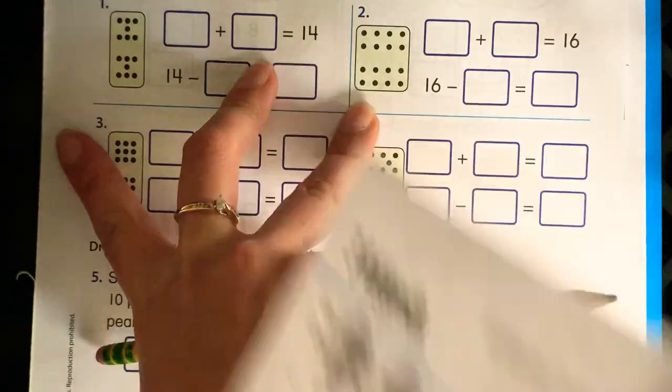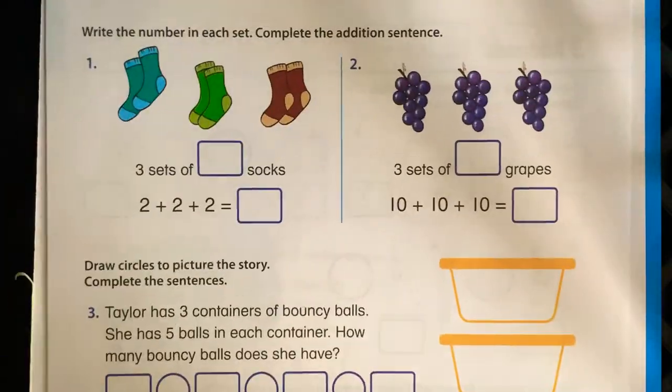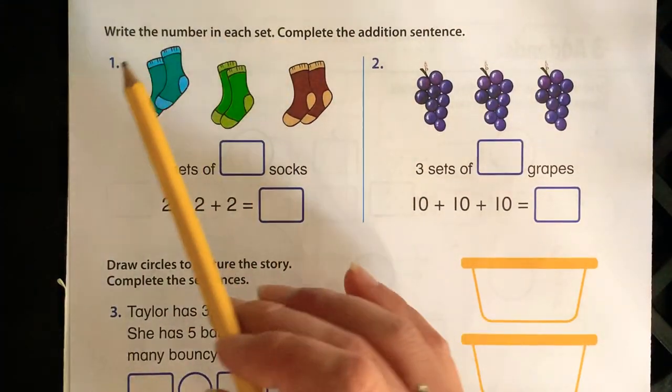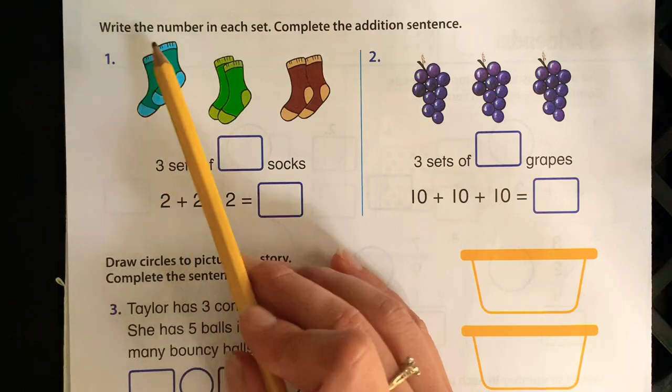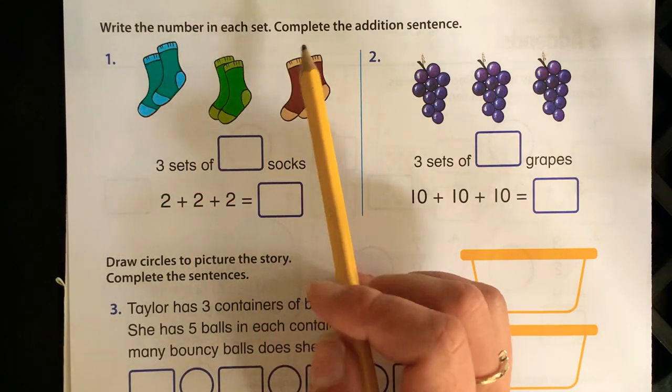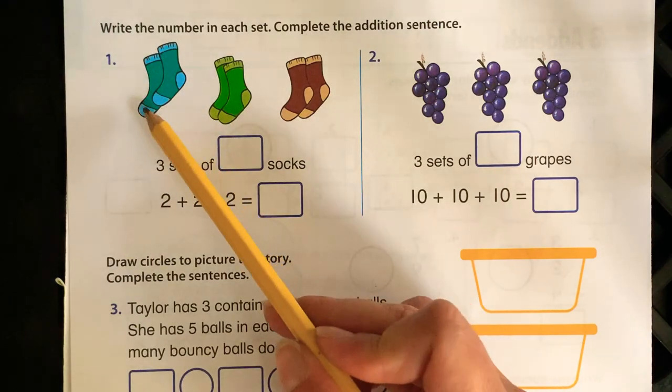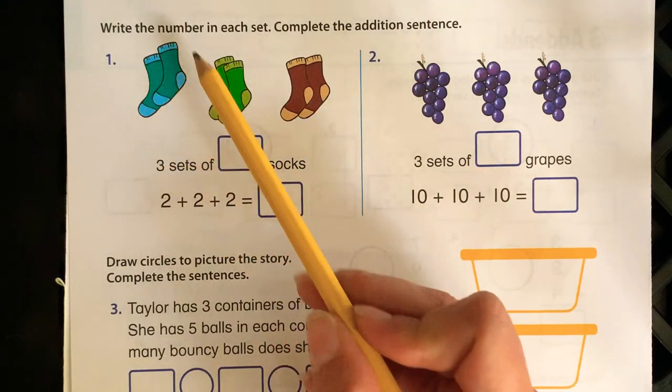I'm going to flip it over to the back side. Join me when you are ready. The directions on the back say write the number in each set, complete the addition sentence. We already did this. There's three sets right here: one, two, three. And how many socks are in the set?